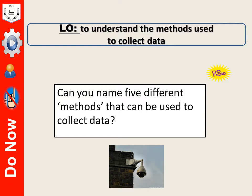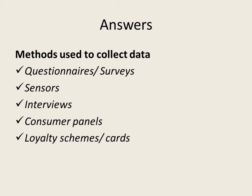There's a bit of a clue underneath for one of the answers. The answers for the do now question — the methods used to collect data — could be through questionnaires or surveys, sensors, interviews, consumer panels, and loyalty schemes.